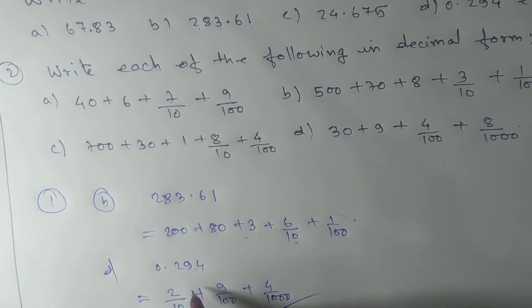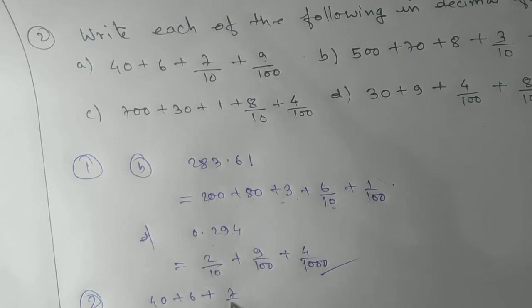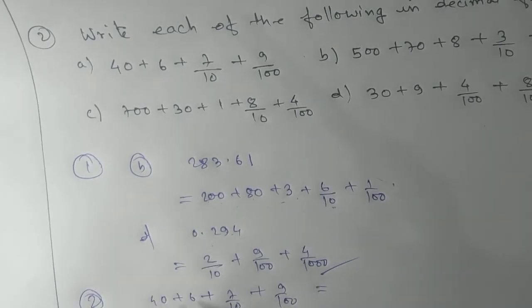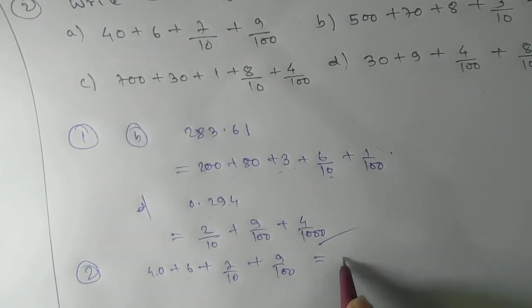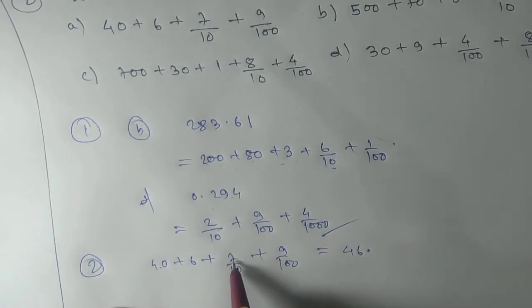Similarly, let's see - we have 40 plus 6 plus 7 by 10 plus 9 by 100. This will be what? 40 plus 6 will be the whole number part, that is 46. After that, see here, 7 by 10 means we put a decimal point. 7 by 10 means it is in the tenths place, and 9 is in the hundredths place. This is your answer.